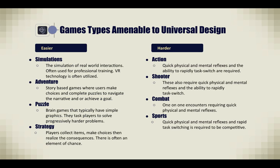Some game types are more amenable to universal design than others. Easier game types include simulations — simulations of real-world interactions often used for professional training, with VR technology frequently utilized. Adventure games are story-based games where users make choices and complete puzzles to navigate the narrative or achieve a goal. Puzzle games include brain games with typically simple graphics that task players to solve progressively harder problems. Strategy games involve players collecting items, making choices, then realizing the consequences, often with an element of chance.